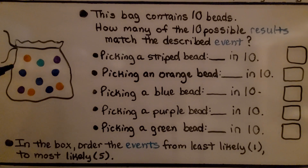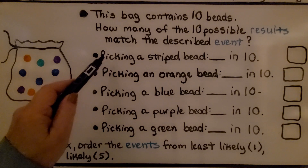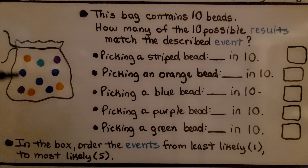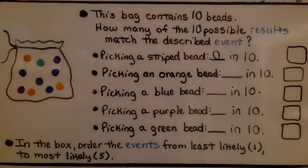Take a look at this bag I drew. This bag contains 10 beads. How many of the 10 possible results match the described event? Picking a striped bead — how many chances would I have of picking a striped bead if I stuck my hand in this bag and picked a bead? Well, there are no striped beads, so the chance of picking a striped bead would be 0 in 10.